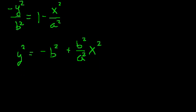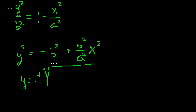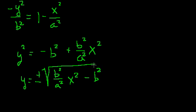We're almost there. Taking the square root, y equals plus or minus the square root of b squared over a squared times x squared minus b squared — switching the terms so the positive one comes first.